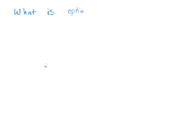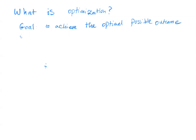In this lecture we are going to talk about the fundamental definition of an optimization problem and what are the main components to formulate an optimization problem. Our goal is to achieve the optimal possible outcome in a given situation.